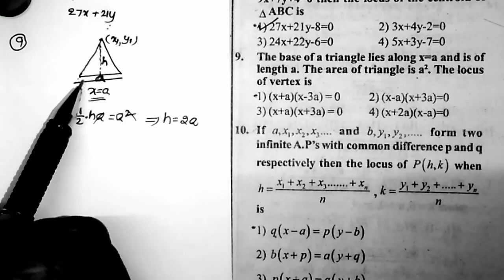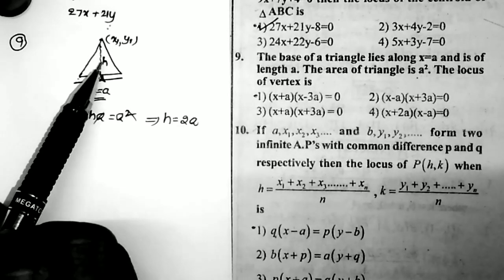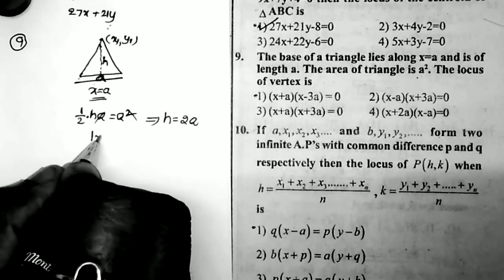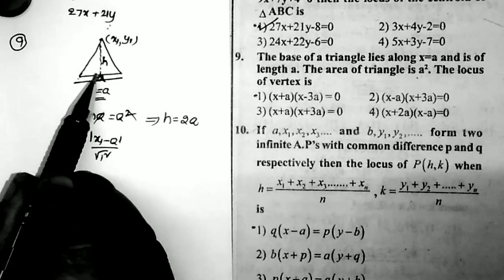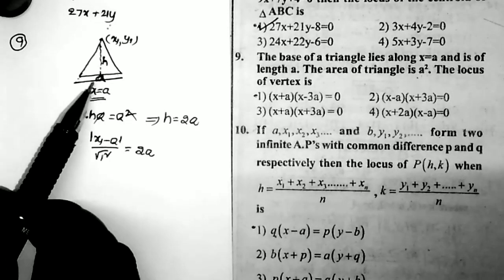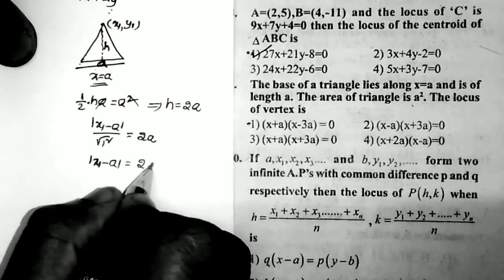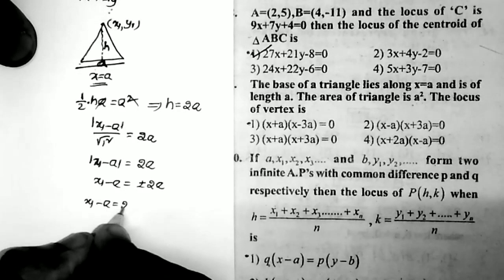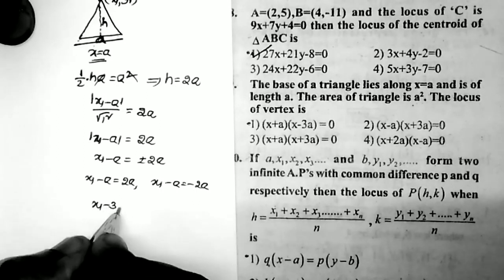From the diagram, the height is the perpendicular distance from the vertex to its opposite side. The side equation is x = a, so the perpendicular distance is |x₁ - a| / √1² = |x₁ - a|. This equals the height 2a. So |x₁ - a| = 2a, giving x₁ - a = ±2a. The first case: x₁ = 3a, so x₁ - 3a = 0.